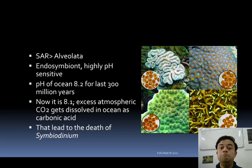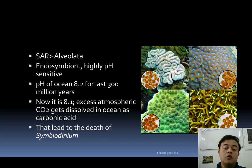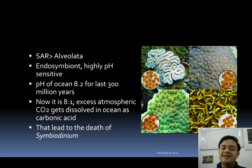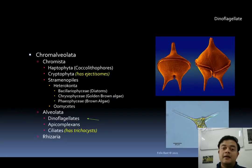Although 0.1 on the pH scale seems minute, because the scale is logarithmic it represents a tremendous change in reality. Excess CO2 in the atmosphere dissolves in the ocean as carbonic acid, driving down the ocean's pH. This ocean acidification leads to the death of Symbiodinium, which is why coral reefs are getting bleached.